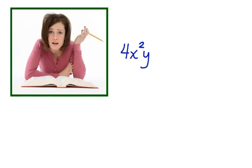4x squared y times the quantity 3xy minus 2x squared plus 4x. She isn't sure how to work with this problem. Do you know?